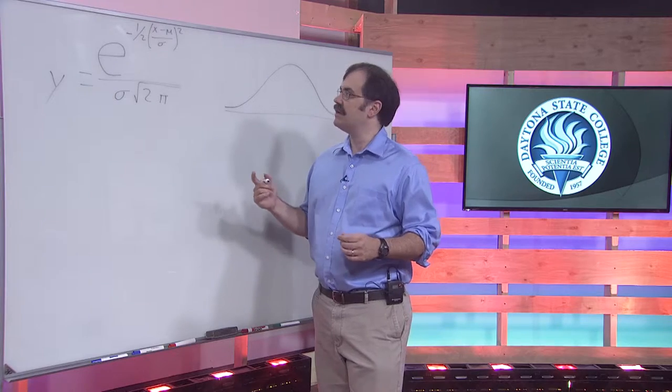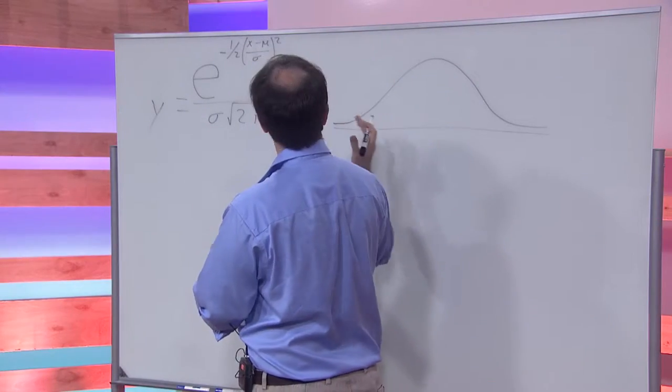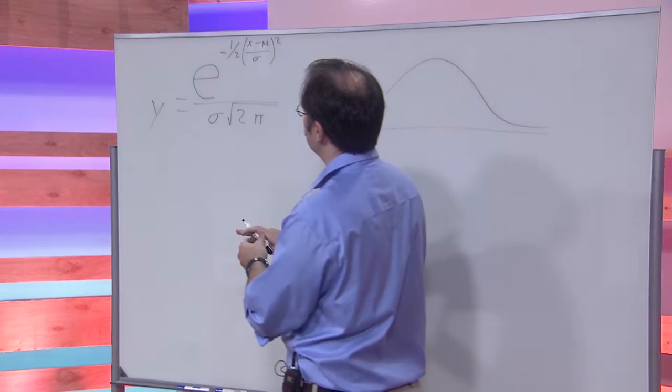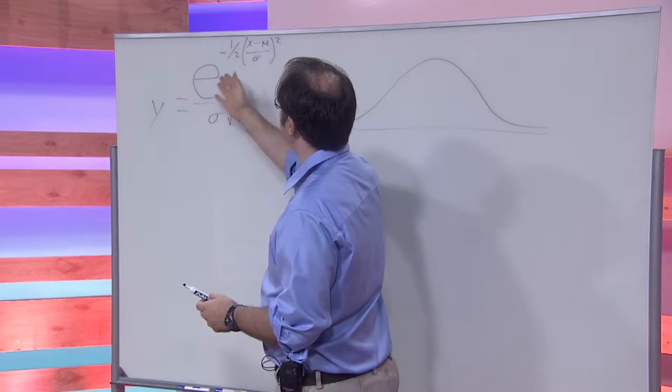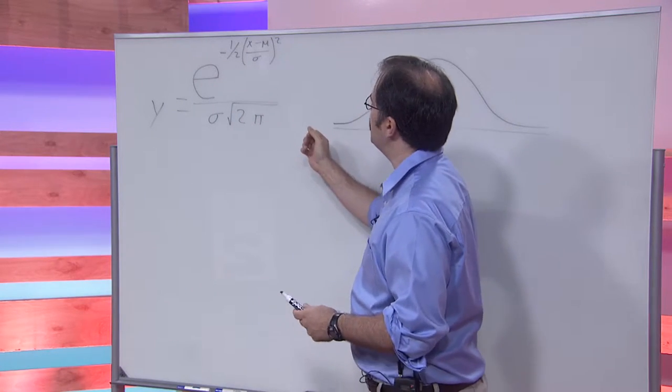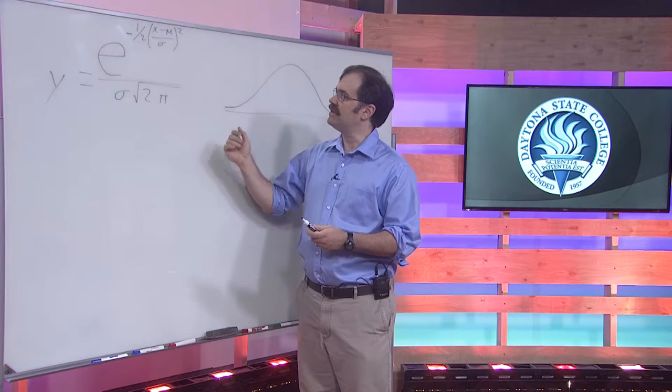But today what we're going to talk about is a very special type of normal distribution. If you look over here, this formula right here is the formula for the normal distribution.